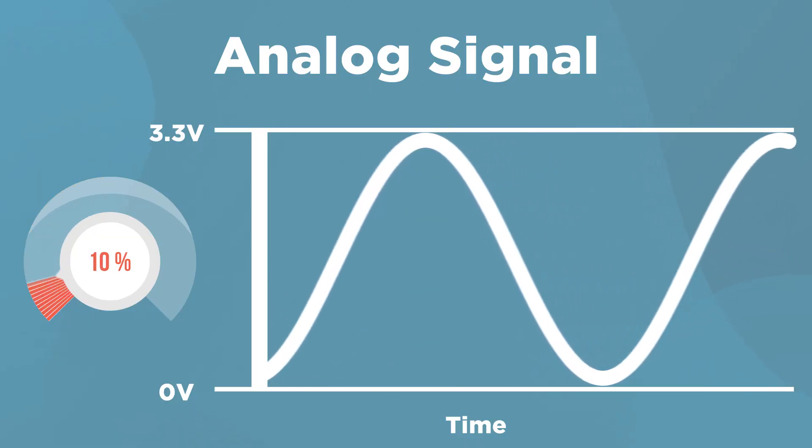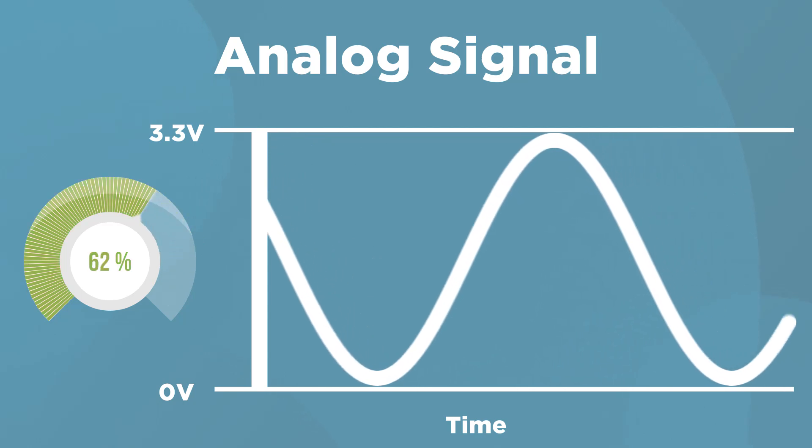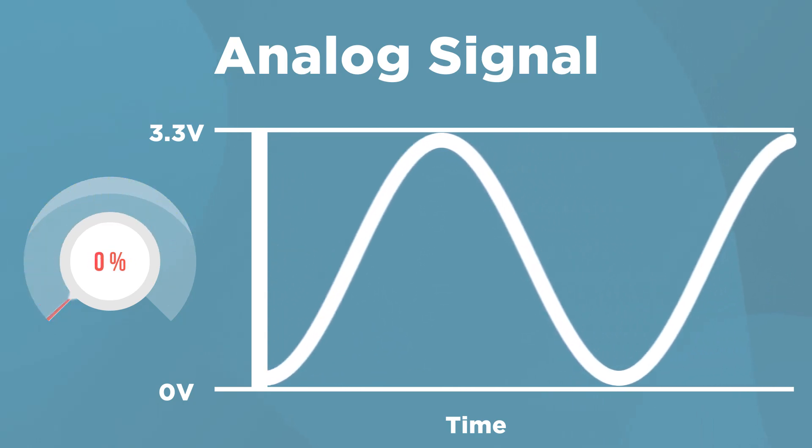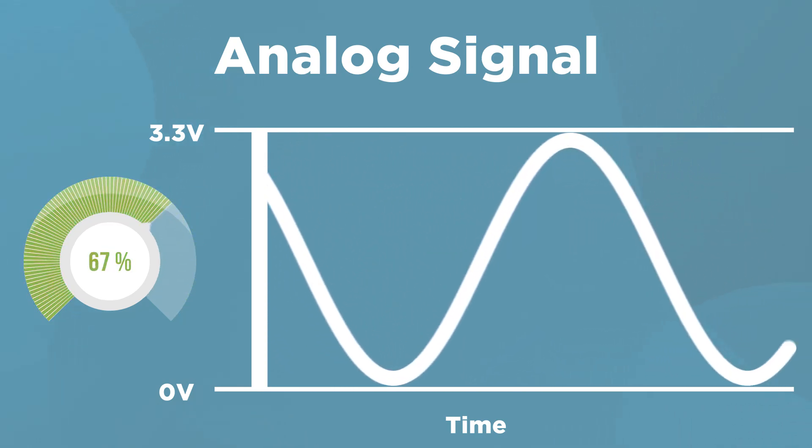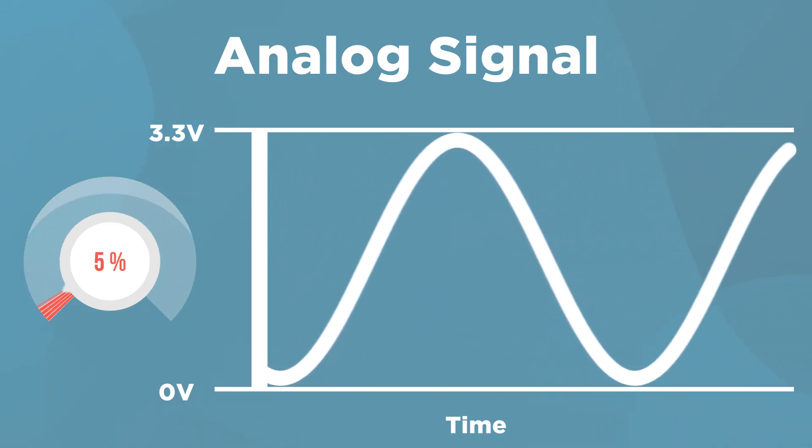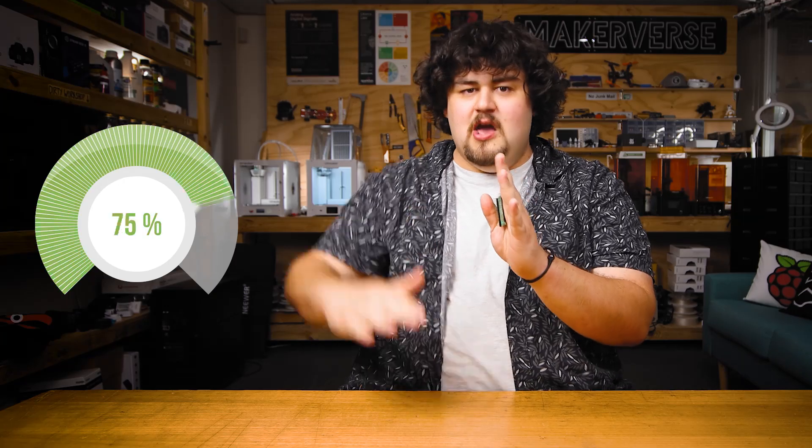An analog signal, on the other hand, is a signal that can be any value between on and off, or the maximum and minimum values. It's a bit different to a digital output in that it can take any of the values between them. When we use the pins of our Pico to output an analog signal, we use them kind of like a dimmable light switch — you can set any brightness between fully on and fully off.